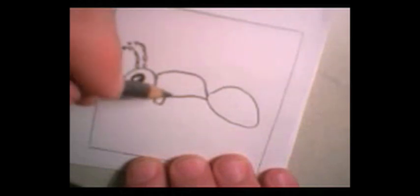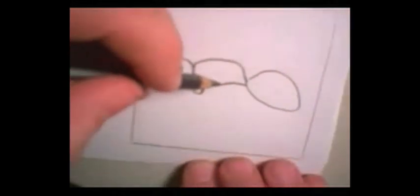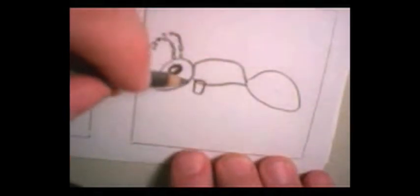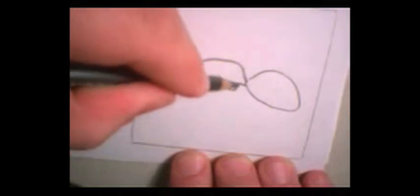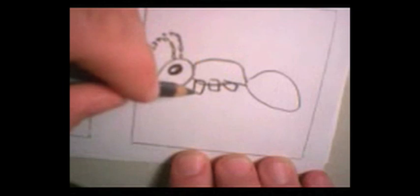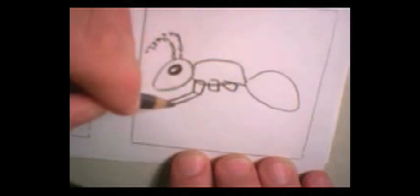Now, how many legs on an ant? Six, right? So let's go ahead and we're going to make the first parts of those. These legs are segmented, which makes them kind of weird, because you've got one part, a second part, a third part, a fourth part. That's one. These kind of go back.